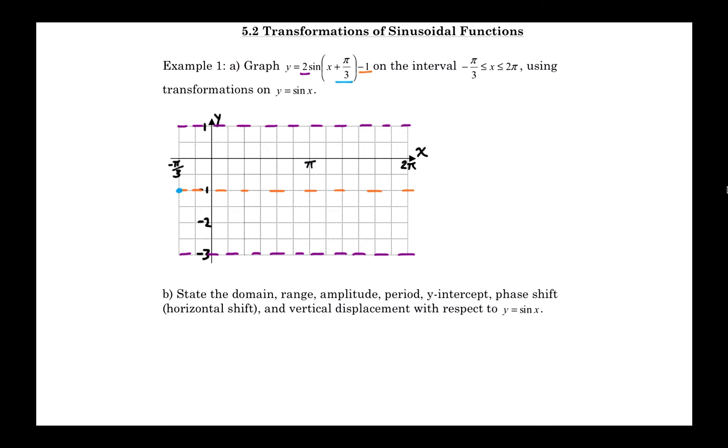Next thing I do is I use the fact that the amplitude is 2 to go 2 above that y equals negative 1 line, and I go 2 below it, and I make two more dotted lines. Now notice that these are dotted or dashed lines just to indicate they are guiding lines to help me draw the graph. They're not actually part of the graph.